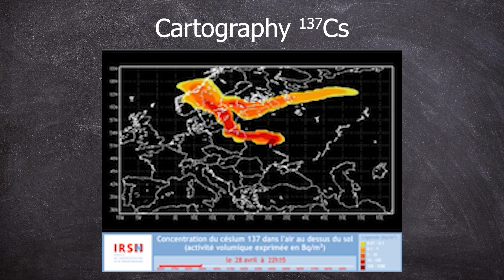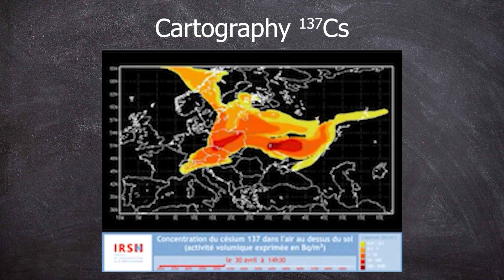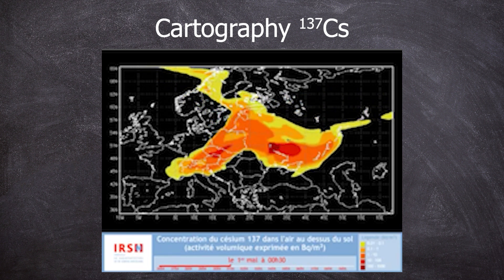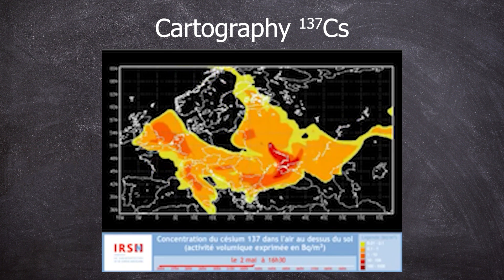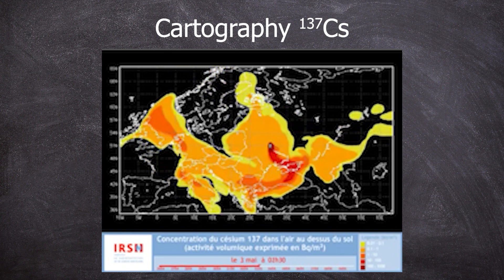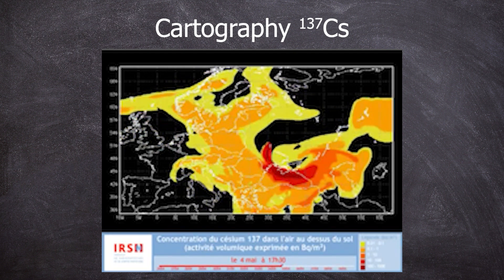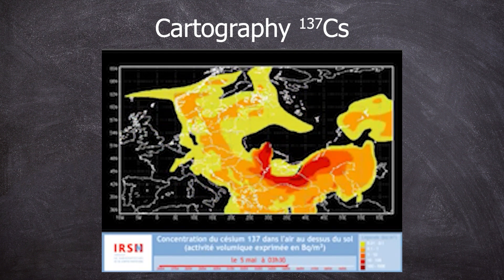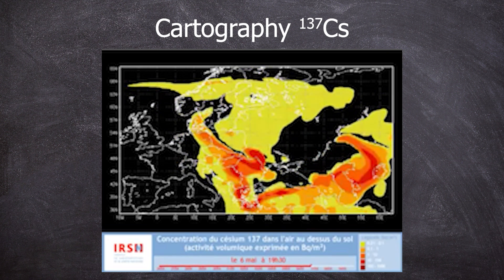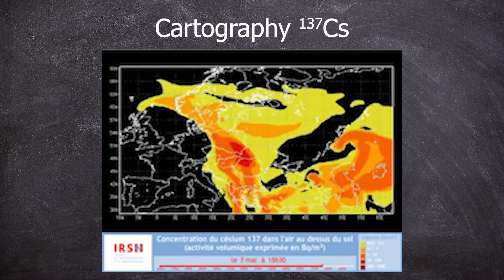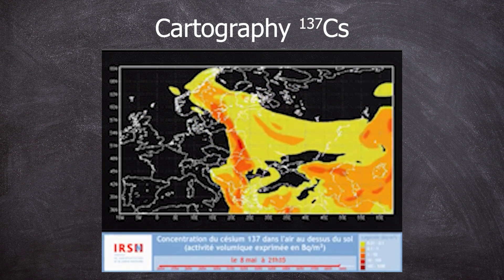This highly volatile Cesium-137 disperses, driven by the weather, over the next weeks and months across Europe. While many short-lived radionuclides were also released, they have mostly decayed by now. Approximately 85 million gigabecquerels of Cesium-137 were released at the time of the accident. With a half-life of about 30 years, around 38 million gigabecquerels should still be dispersed over Europe today.